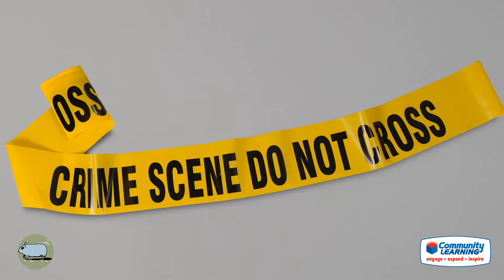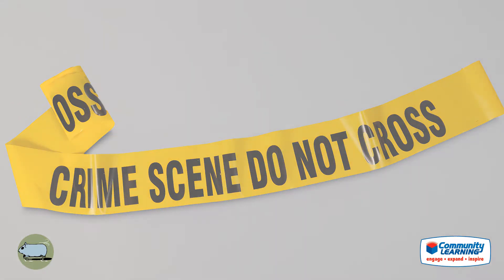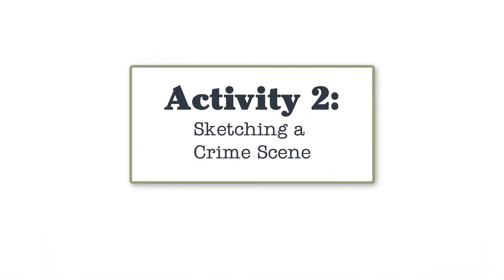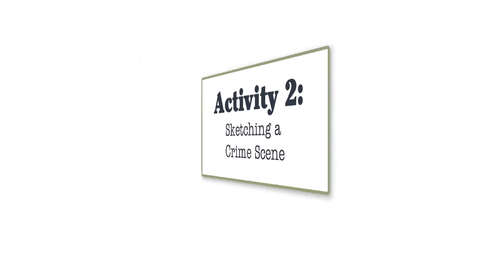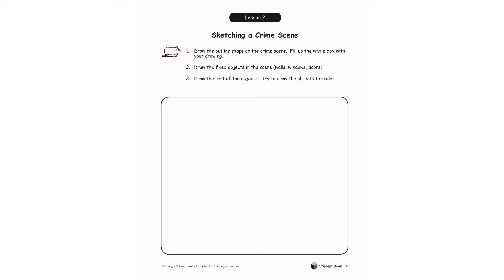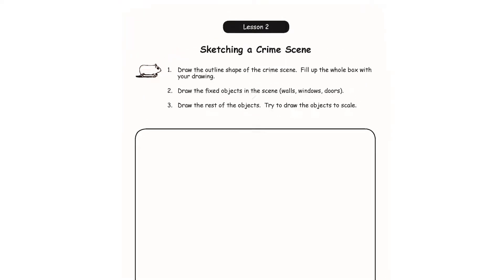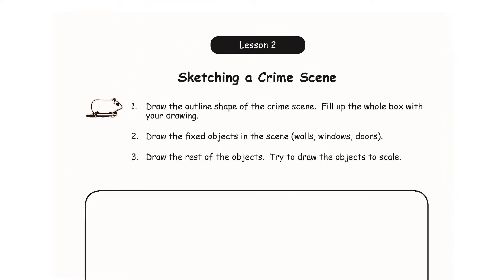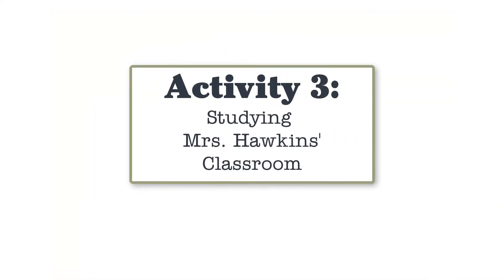Activity Two: Sketching a Crime Scene. The instructor will use the flip chart to create a rough sketch of the crime scene in the classroom. Students can create a smaller version in their student books.